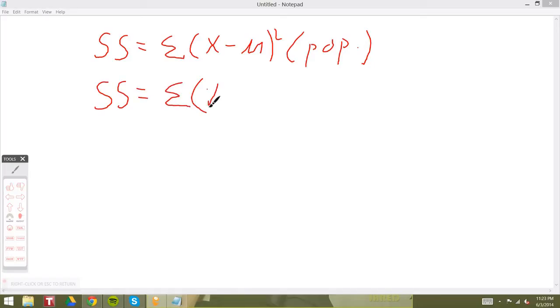Now if you have a sample instead of a population, your formula is going to look like the summation of x minus m squared, where m is now your mean for this particular sample. Regardless of whether you have a population or sample, the SS will be computed the exact same way.